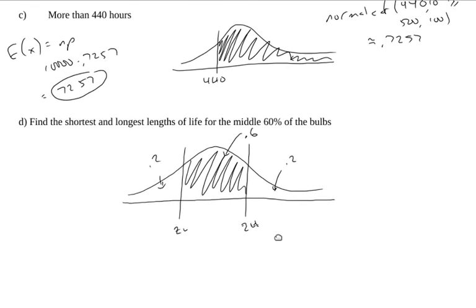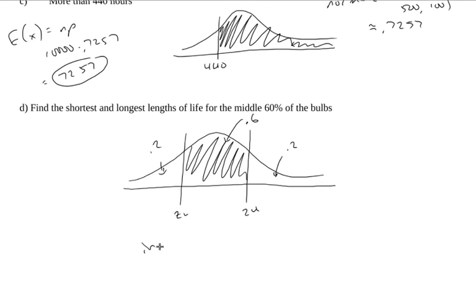So the reason I need this is because now I can use inverse norm. And I can figure out what is the area to the left of this cutoff. Well, there's 20% of the area to the left of that cutoff. So I'll do 0.2, inverse norm, with a 0.2, 500, and 100 for the lower cutoff.